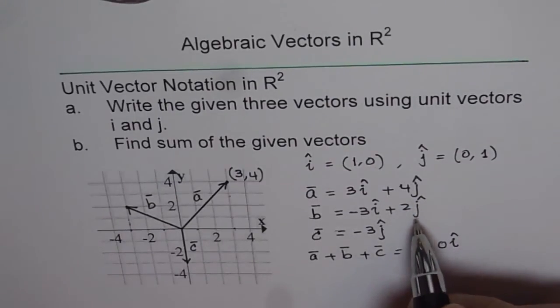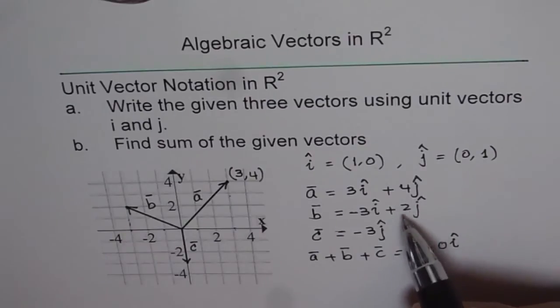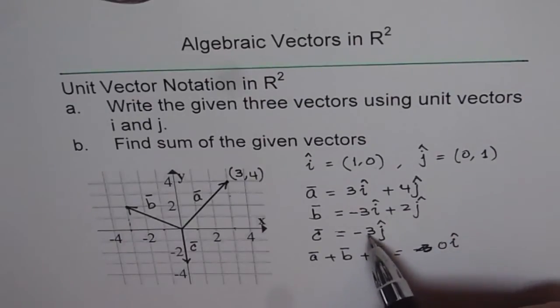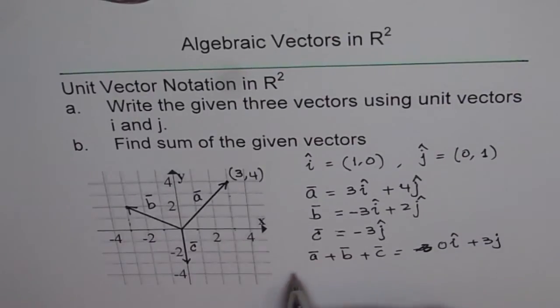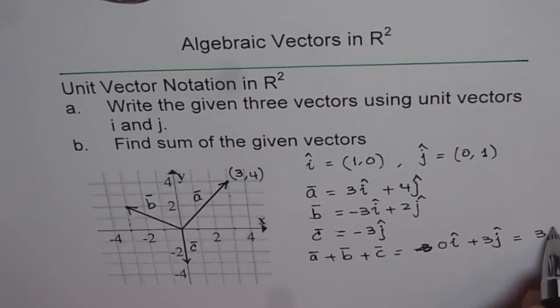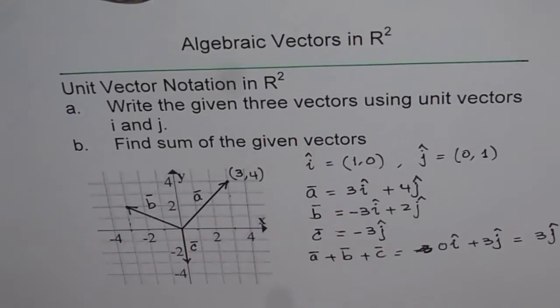And along the j, we get 4 plus 2 minus 3. 6 minus 3. That means plus 3j. So basically, when you add these vectors up, you get a resultant vector, which is 3j. So that is your answer as a sum.